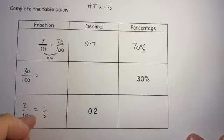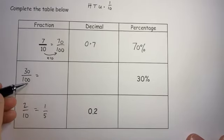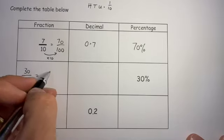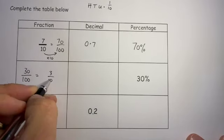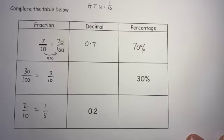Now just like this one, that can cancel down because they're both in your 10 times table. 10 goes into that three times and 10 goes into 100 ten times, so that's 3 over 10.